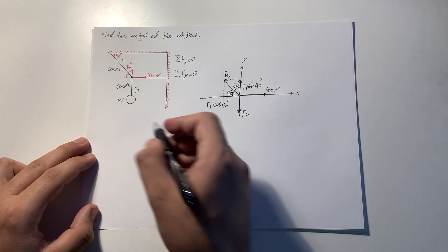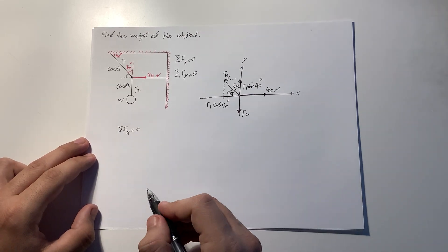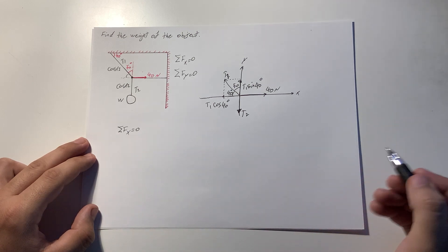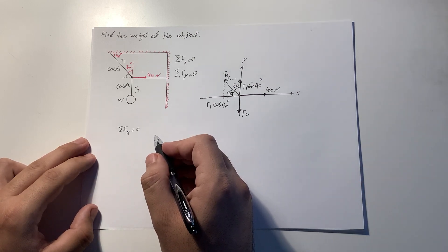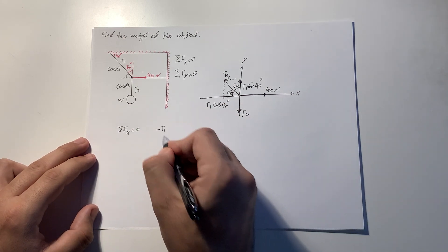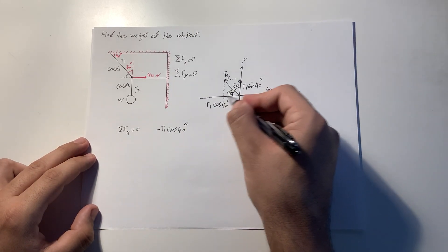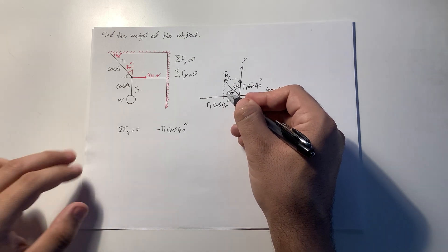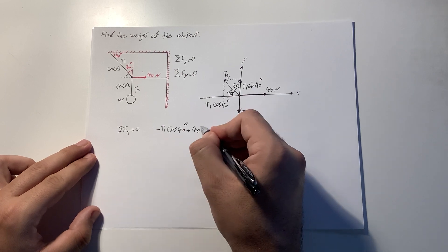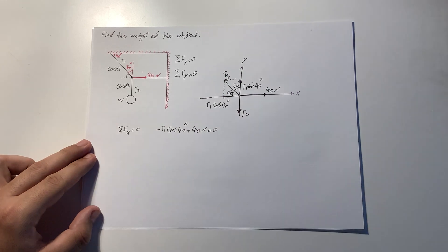In the x-direction we have this tension component and the 40 Newtons force. The sum of all forces in the x-direction must equal zero, so we have: negative T1 cosine of 40 degrees — negative because the tension points in the negative x-direction — plus 40 Newtons equals zero.